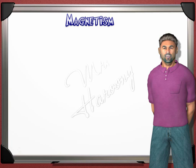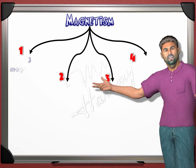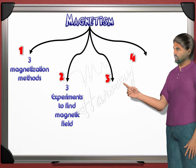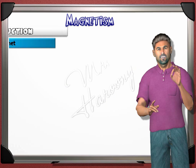This is the first lesson in Section 2 Electromagnetism, Chapter 3 Electricity. After a short introduction, we will talk about four main points: three methods of magnetization, how we can change a normal piece of iron or steel into a magnet; three experiments to find the magnetic fields; three shapes of different magnetic fields; and three methods of demagnetization. Let's start with a short introduction.